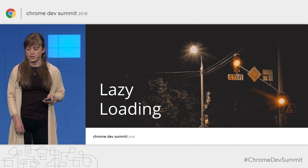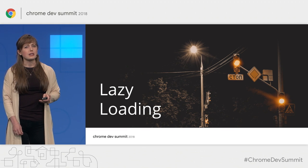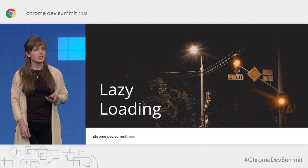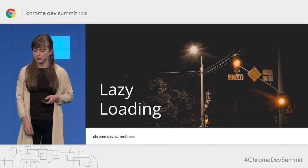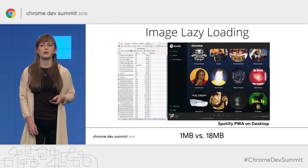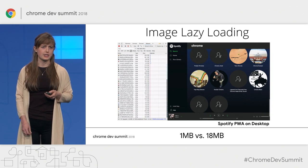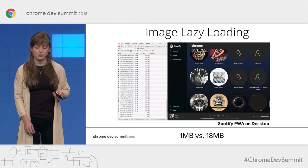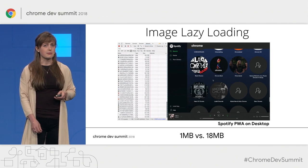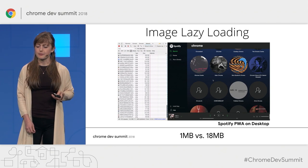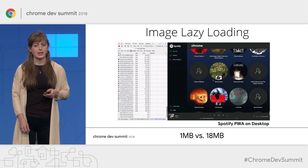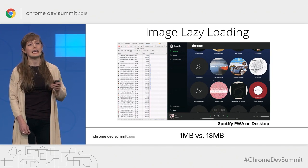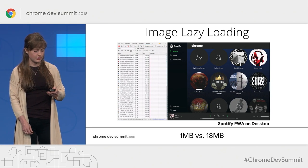Lazy loading is the last image technique I'll be talking about today. It is the strategy of waiting to download a resource until it is needed, and in addition to images, it can be applied to resource types like JavaScript. Image lazy loading helps performance by easing the bottleneck that occurs on initial page load, and it saves user data by not downloading images that may never be used. Spotify is an example of a website that uses this technique very effectively — on one particular page, lazy loading was the difference between loading 1 megabyte of images versus 18 megabytes on initial page load.